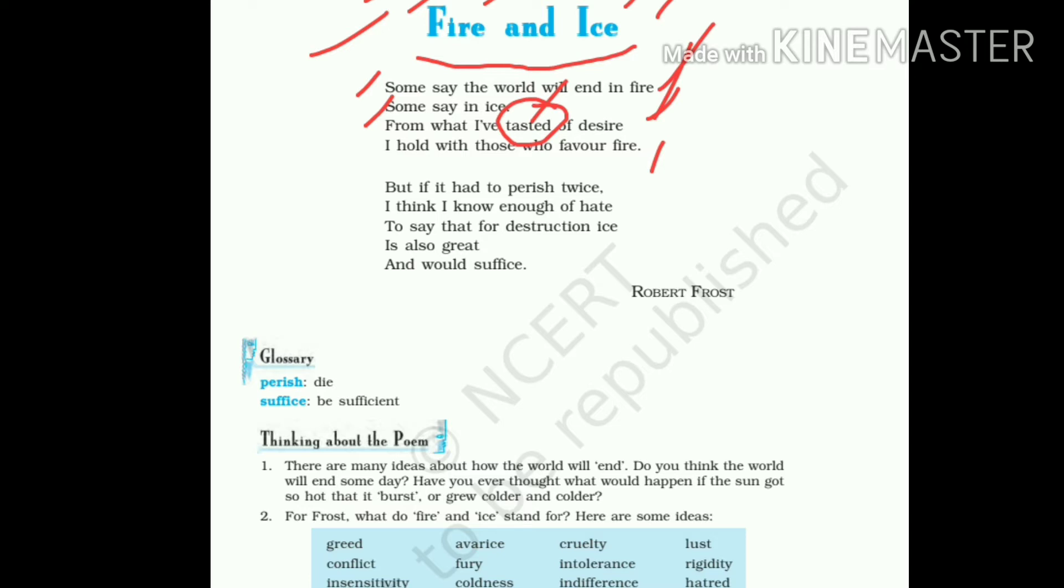The word 'desire' is taken as a synonym for fire. Here you can see a box. Many elements are given here, and there is a question asked: For Frost, what do fire and ice stand for? There are many elements that represent fire and others represent ice. So desire represents fire. Desire is what? Desire of greed, desire of avarice, desire of lust.